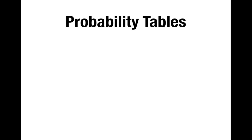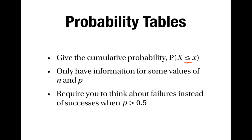There are a few things to bear in mind when using the binomial probability tables. First, they give you the cumulative probability — the chance that X is less than or equal to something. Second, they only have information for some values of n and p, so if you have awkward numbers like 13 trials or 0.32 as the probability of success, you'll have to use the formula method shown at the beginning. Finally, if the probability of success is greater than 0.5, you need to think about the number of failures instead of successes.